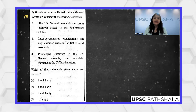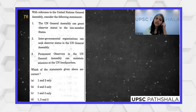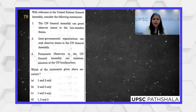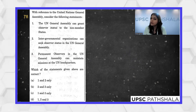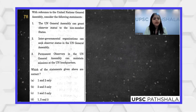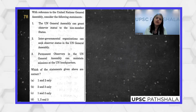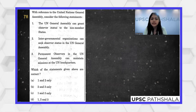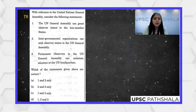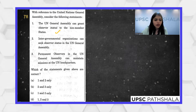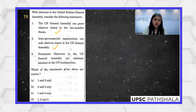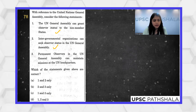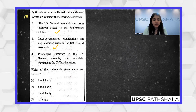With reference to the UN General Assembly, consider the following statements. The UN General Assembly can grant observer status to non-member states — Palestine, for example, is not a full-fledged member but has observer status. It can also grant observer status to intergovernmental organizations like the ADB and other multilateral banks. Permanent observers in the UN General Assembly can maintain missions at the UN. All three statements seem correct.